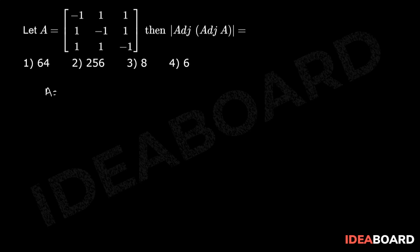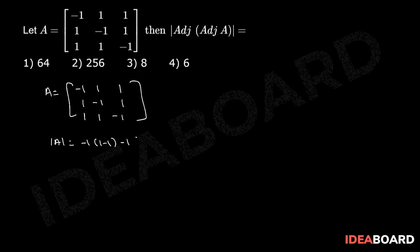Given A equals the matrix: minus 1, 1, 1, 1, minus 1, 1, 1, minus 1. Now det(A) equals minus 1 into (1 minus 1), minus 1 into (minus 1 minus 1), plus 1 into (1 plus 1). That equals 0 plus 2 plus 2, which equals 4.